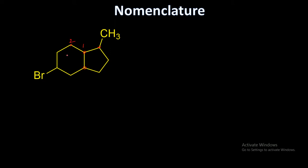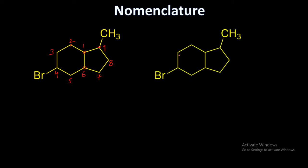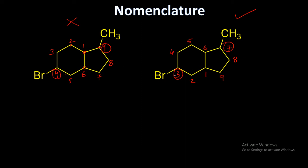Though there are substituents on the five-membered ring side, we should not give number two there; we give number two on the six-membered ring side. So it will be two, three, four, five, six, seven, eight, nine. Going the other way it would be three and seven versus four and nine — three and seven is the lesser set, so that numbering is preferred.